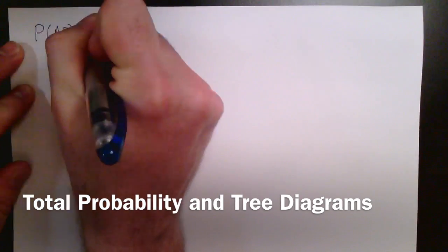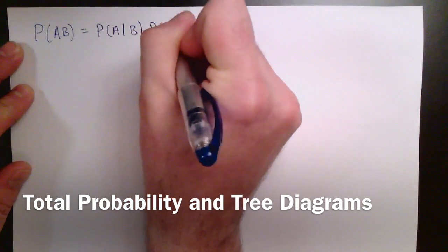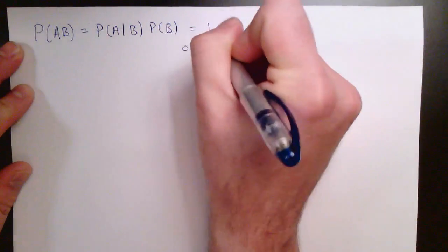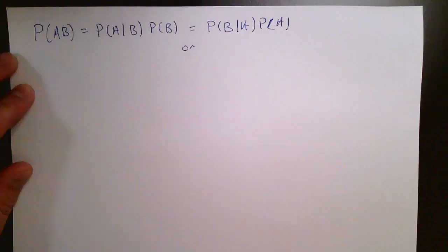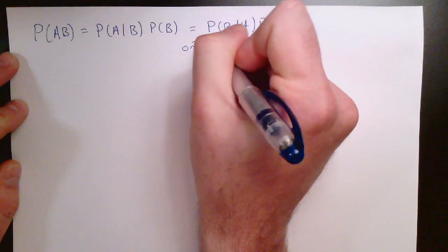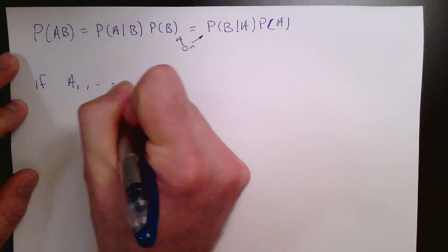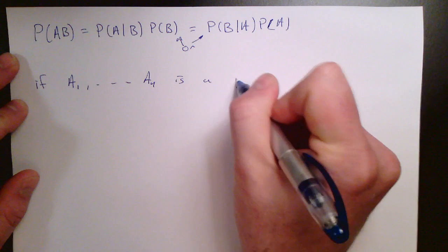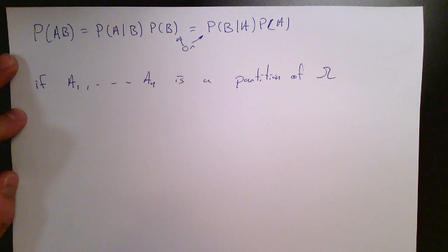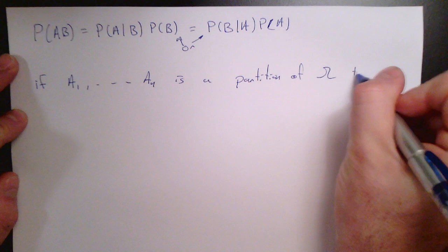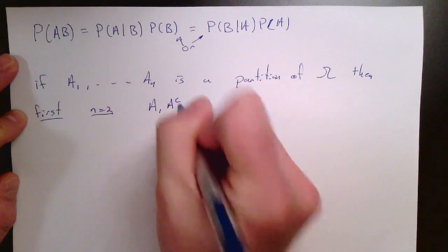Let's see another ramification of the definition of conditional probability. We'll rewrite it in a way that will be useful for solving problems that don't immediately present themselves as using conditional probabilities. We've written the probability of A and B as the probability of A given B times the probability of B, or as the probability of B given A times the probability of A. We can do this in general when we have a partition A1 to An of omega.